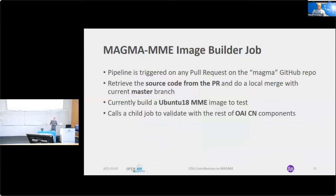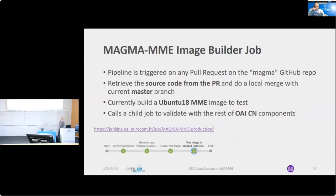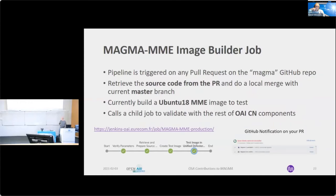If the build completes successfully, we call a child job to validate with the rest of the OpenAir CN components and stimuli. The pipeline URL shows an OpenBlue associated view with retrieving, building, and testing steps. The testing is a child job, and on your pull request you will have a notification indicating whether it passed or failed.